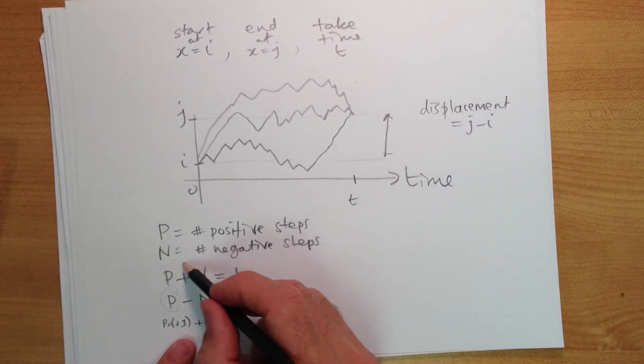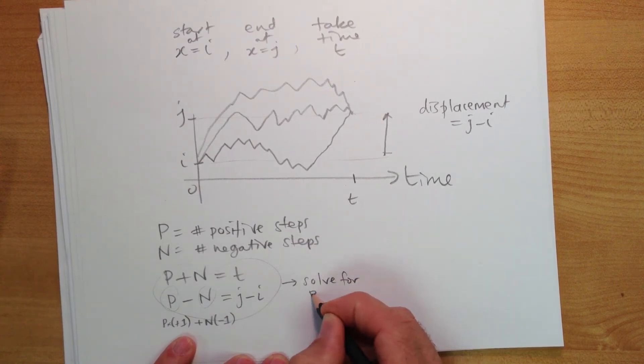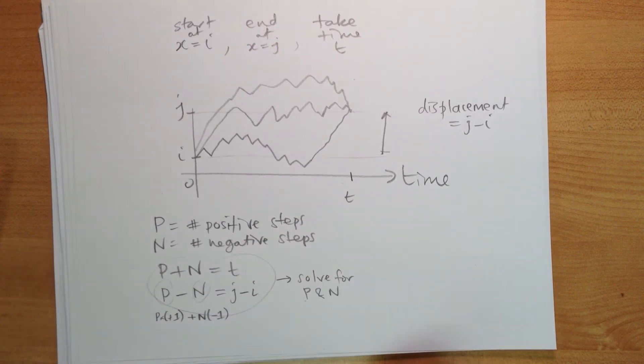From this you can solve. So the idea then is solve for p and n. It's not hard, two little linear equations there.